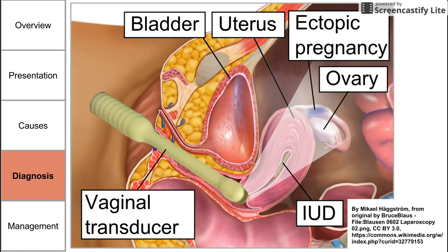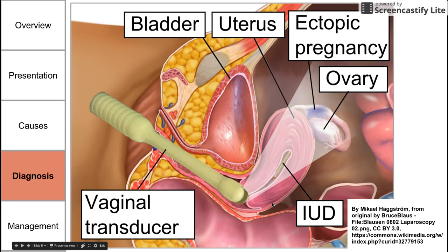For diagnosis, before discussing the diagnostic algorithm, here are some diagnostic techniques. A transvaginal ultrasound uses a transducer inserted into the vagina to look through the cervix and uterus, giving a direct view of the cervix, uterus, ovary, and tube — where an ectopic pregnancy is most likely to occur. The bladder is anterior to the uterus and the rectum is posterior. This vaginal transducer can be helpful in diagnosing ectopic pregnancy.